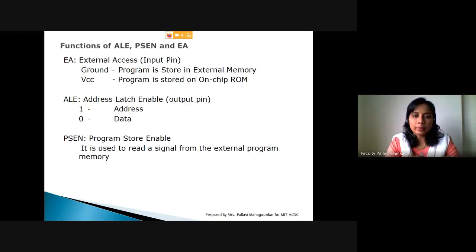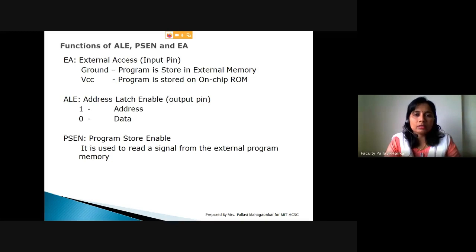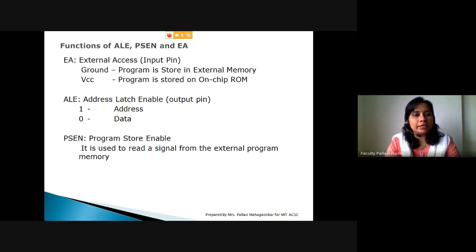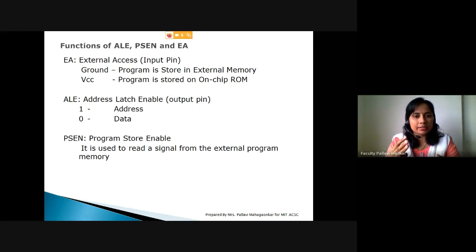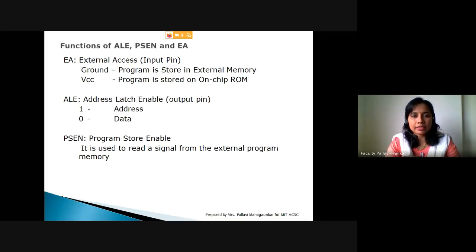In 8051, we have 128 bytes RAM and 4K ROM. That memory may not be sufficient, so the solution is: if we don't have enough space, we will connect external memory. The external memory is connected via three types of buses: the address bus, data bus, and control bus. In the control bus there is a connection called chip select.